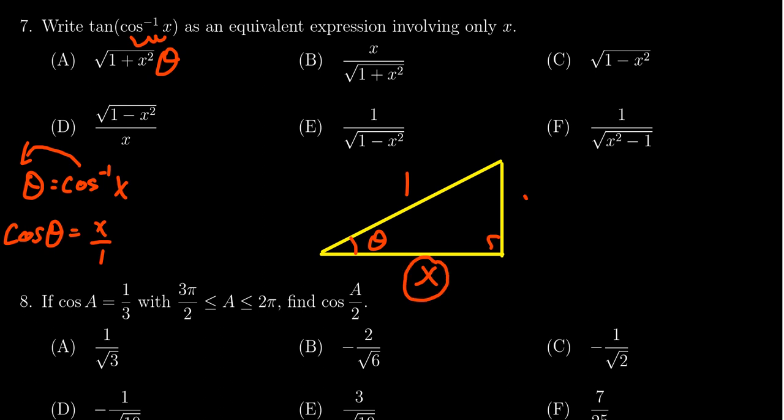Well, we have that this side squared plus this side squared equals this side squared. Using the Pythagorean equation, we can solve for the remaining side right here to give you the square root of one minus x squared.